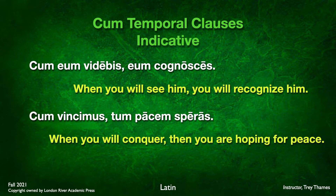Here's another example: cum vincamus, tum pacem speras. Cum vincamus — vincamus is active future tense first person plural, 'you will conquer.' Tum pacem speras — tum means 'then,' speras is a first conjugation active present tense second person singular verb, 'you are hoping,' and pacem means 'for peace.' So: when you will conquer, then you are hoping for peace. Again, it's a temporal relationship between these two verbs.